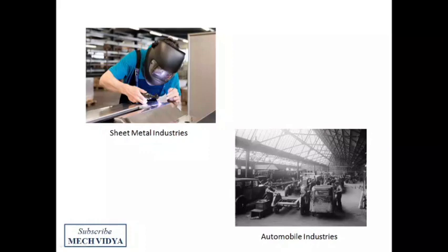Let us now see the important components of a MIG welding setup. First, the shielding gas cylinder. What is a shielding gas and why is it required in MIG welding process? Actually, when we heat any metal to its molten state, it has a tendency to react with atmospheric oxygen and form metal oxides.